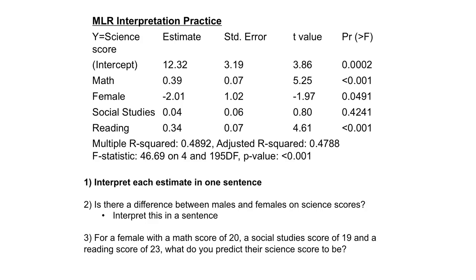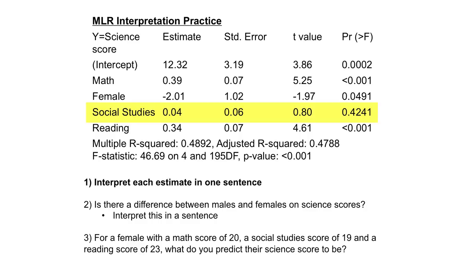For linear regression interpretation practice, our outcome is science score and our explanatory variables are math score, gender, social studies score, and reading score. For every 1-point increase in math score, we expect science score to increase by an average of 0.39 points, adjusting for gender, social studies, and reading scores. Females score on average 2.01 points lower than males on science when adjusting for other test scores. The p-value for social studies is greater than 0.05, so there is no significant association between social studies and science scores after adjustment. For every 1-point increase in reading score, we expect science scores to increase by an average of 0.34 points, adjusting for gender, social studies, and math scores.